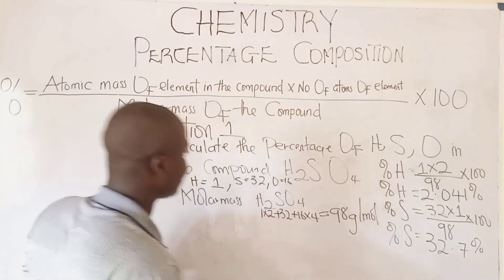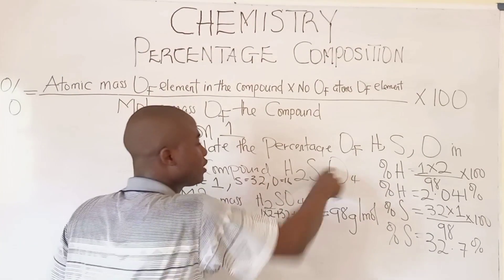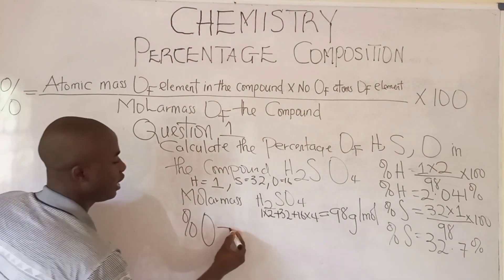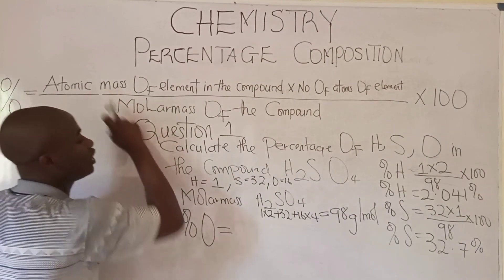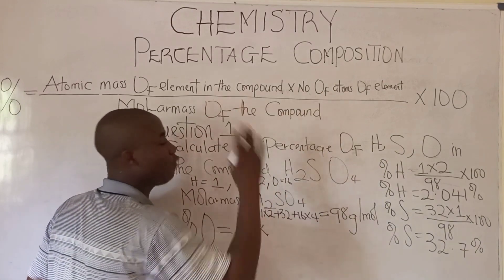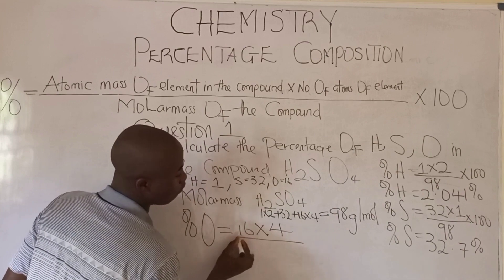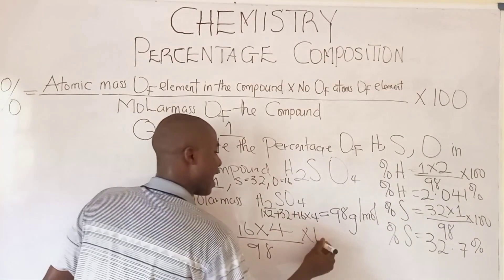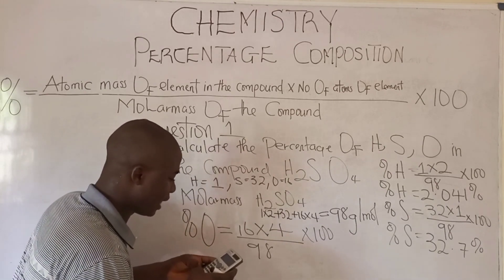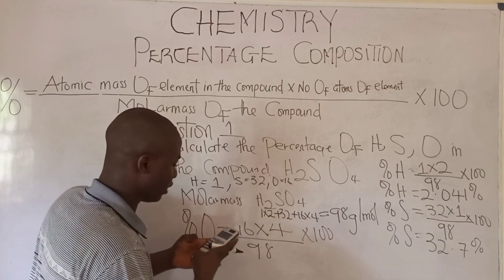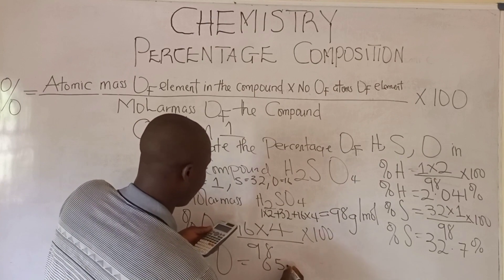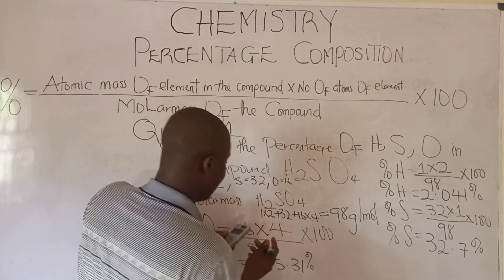Now let's solve for the percentage composition of oxygen in this compound. Percentage composition of oxygen equals the atomic mass of oxygen which is 16, times the number of atoms — we have 4 atoms of oxygen — so 16 times 4, over the molar mass 98, times 100. That gives us 16 times 4 over 98 times 100. The percentage composition of oxygen becomes 65.31%.